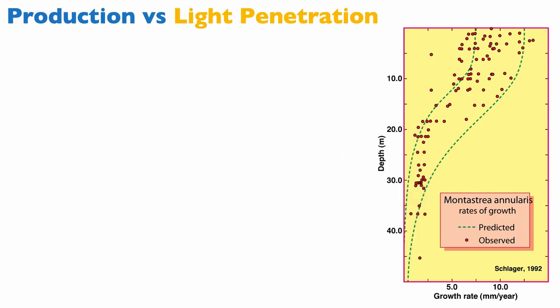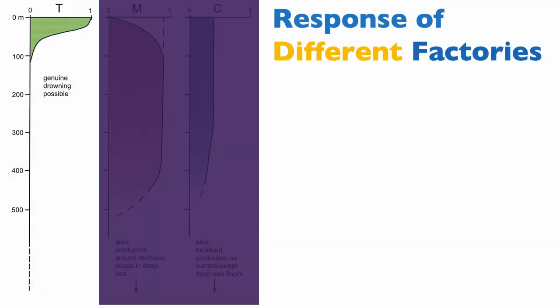Let's see how light penetration impacts the different factories. Starting first with the T-factory, because it's so dependent on light, you can see this graph shows meters in terms of water depths on the vertical axis and the horizontal axis is production, zero to one, one being maximum production. The T-factory has a maximum production very shallow in the water column. In the first few meters we have maximum production. Certainly at 100 meters in most locations around the world that production has ceased.